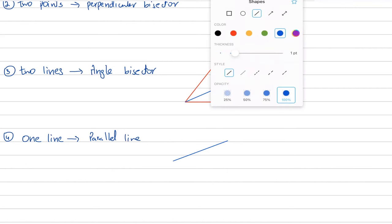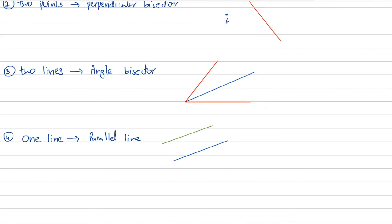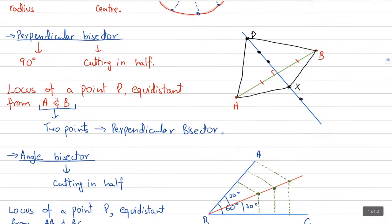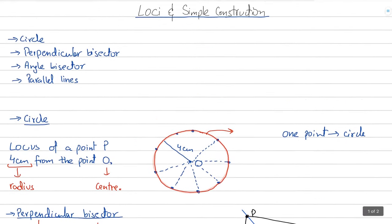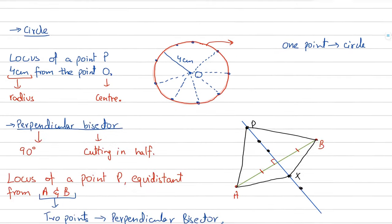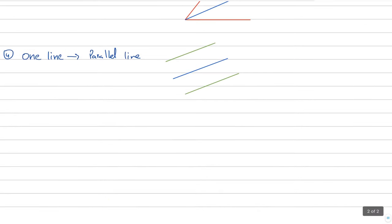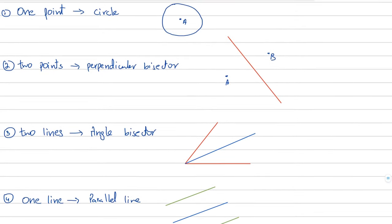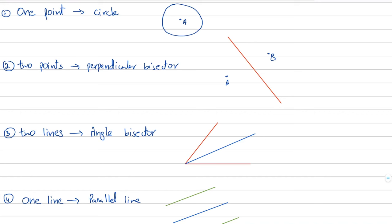That was a detailed review of loci and simple construction. In the next video we're going to learn the shading part, which is perhaps the most important part and the kind of questions you're likely to find in past papers. See you then — take care, bye!